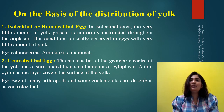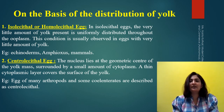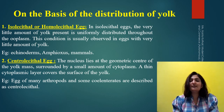The second type is the centrolecithal egg. As the name suggests, the yolk is placed at the center of the egg cell, and there will be a thin layer of cytoplasm surrounding this centrally located yolk. The example for this type of egg is arthropods; some chordates also show the centrolecithal type of eggs.